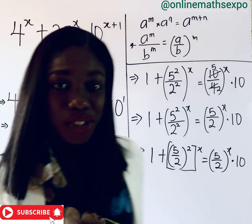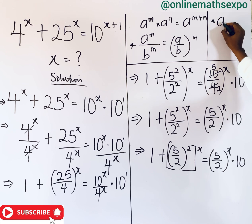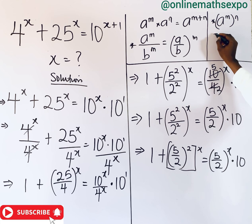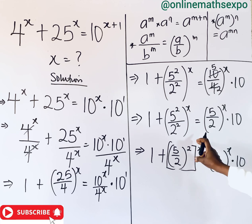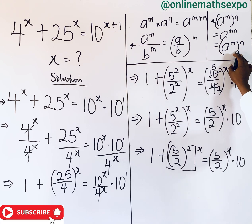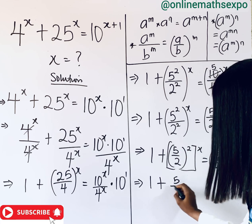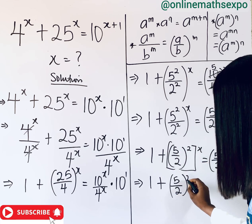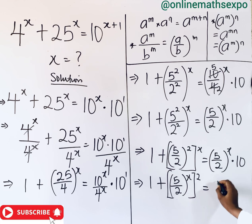Now, let me remind you of the rule of exponents which says that if you have a to the power of m raised to the power of n, it means you have a to the power of m times n. It is also the same as a to the power of n raised to the power of m — you can switch the powers. So we are going to now have 1 plus 5 over 2 raised to the power of x, according to what we have here. And it is equal to 5 over 2 raised to the power of x, multiplied by 10.